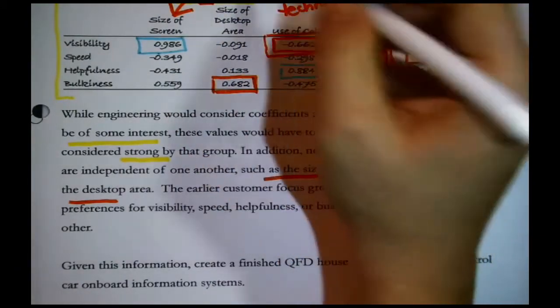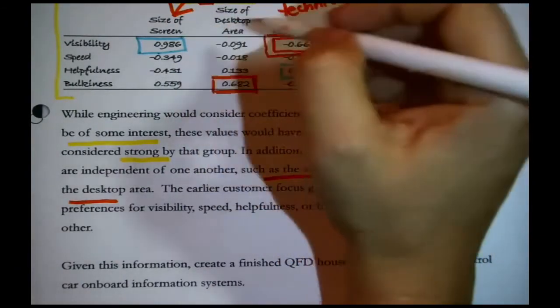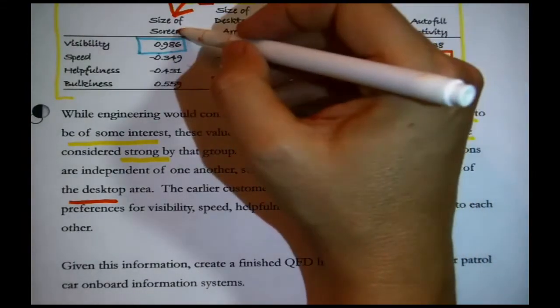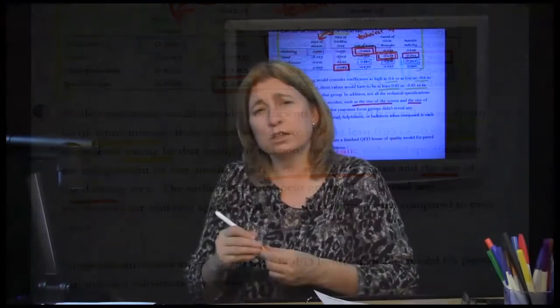And what they're saying is that some of these relate to each other, particularly these two. Right? And this would make sense. And if you read in the book the more detailed version of this, they actually give you a little bit more of a description. The larger the desktop area, the smaller the size of the screen has to be. Essentially, this is a computer system that's got to fit into the dashboard of a vehicle.